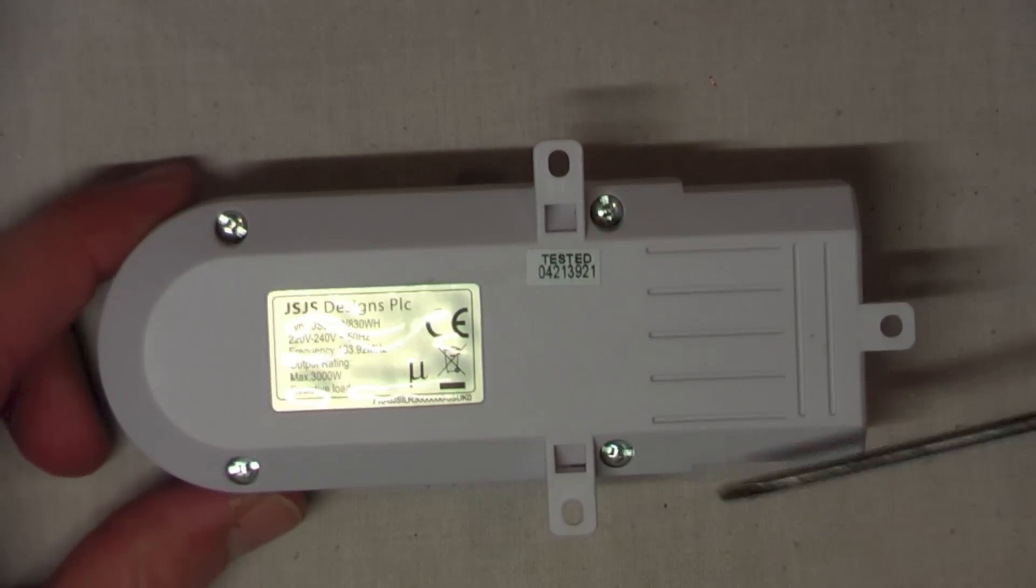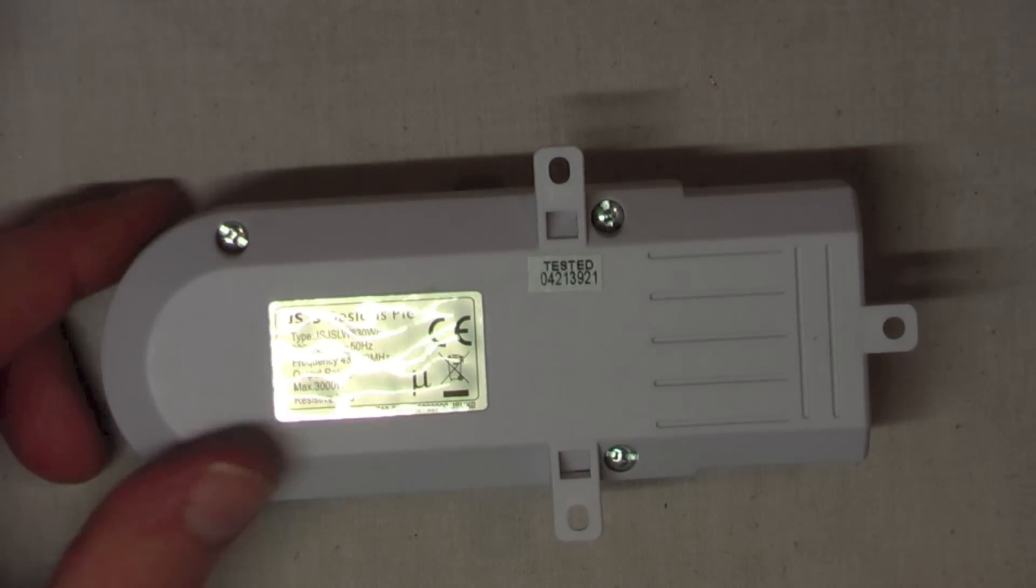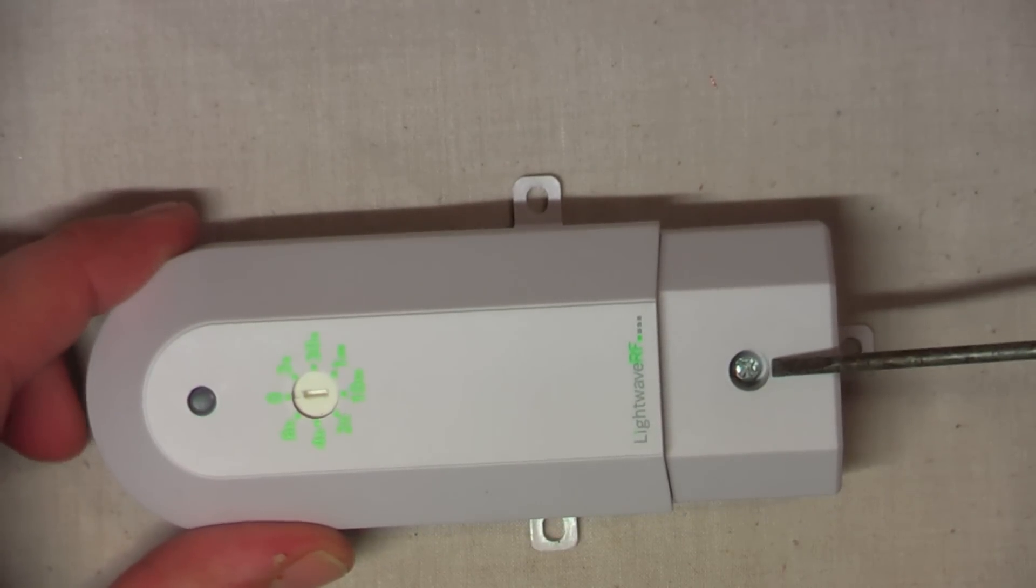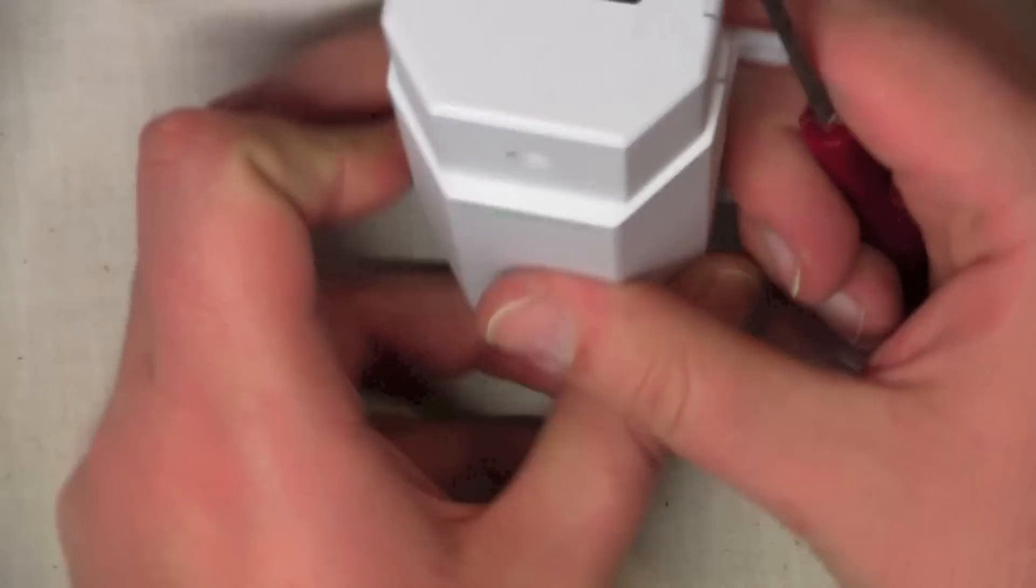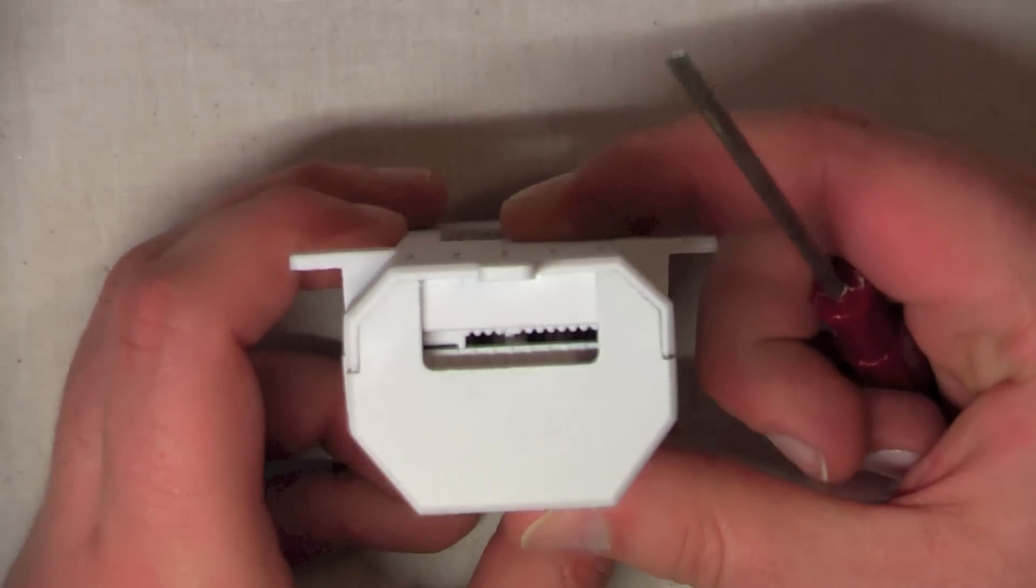On the back we have four security screws, so unfortunately we can't take a look at the insides. And on the front we've got one standard Phillips screw, which covers the cable clamping assembly. As you can see it's quite a chunky piece of kit.